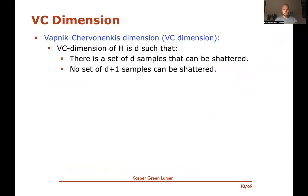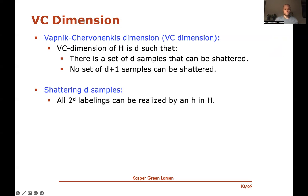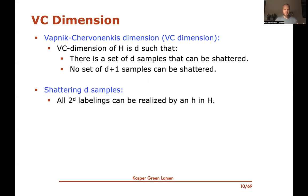The VC dimension of a hypothesis set H is defined as the largest d such that: (1) there exists a set of d samples that can be shattered, and (2) no set of d+1 samples can be shattered. Shattering d samples means that all 2ᵈ possible ±1 labelings of those samples can be realized by some hypothesis in H.